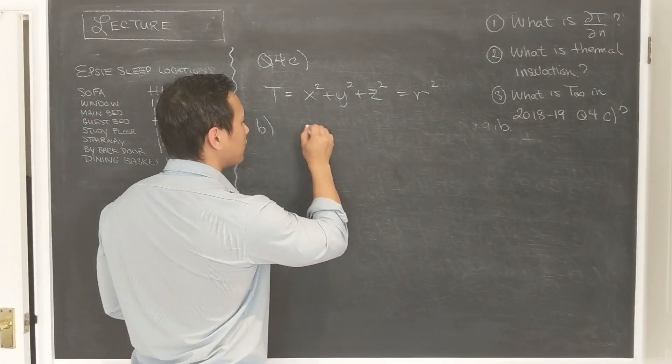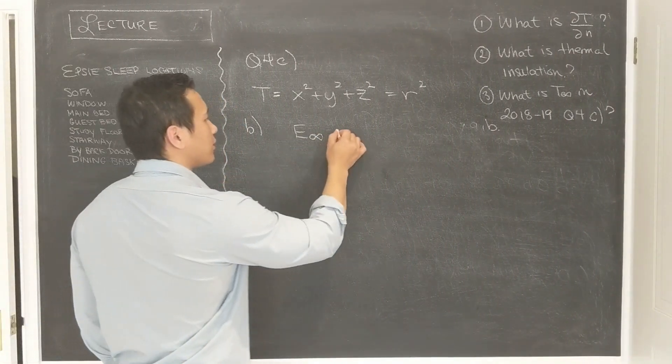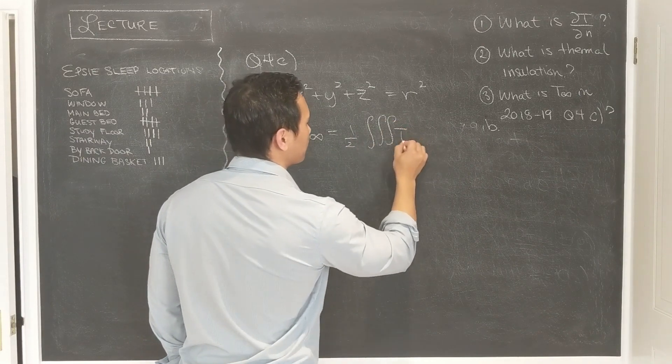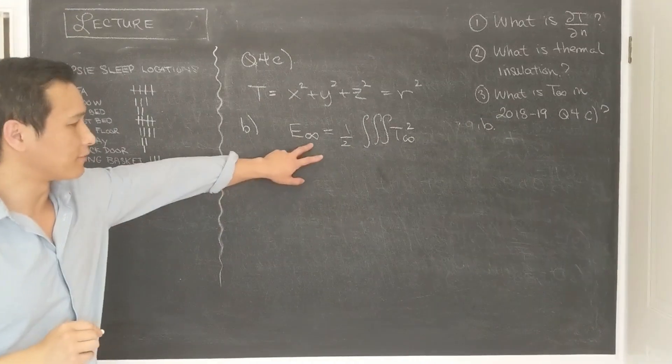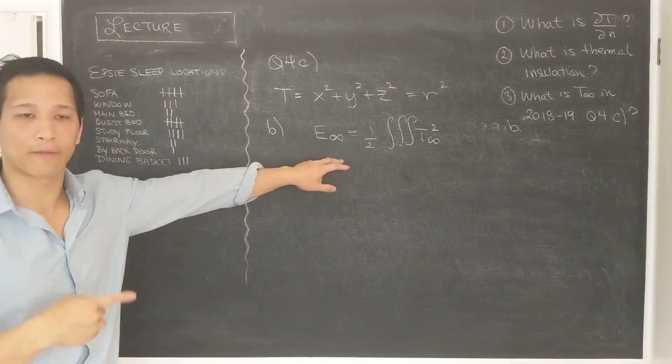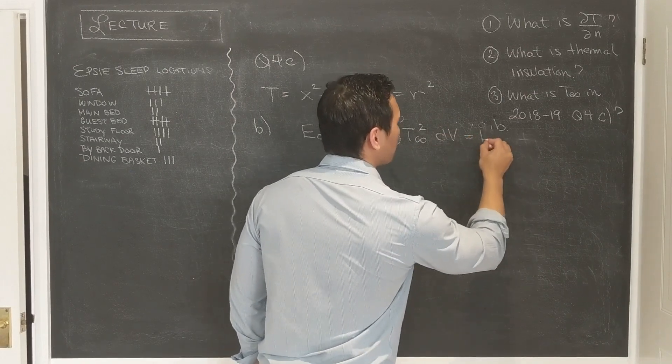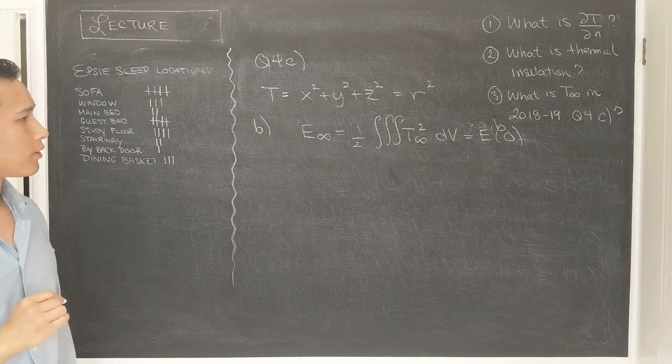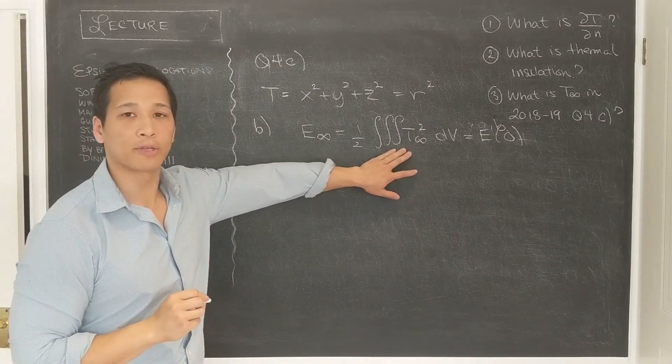So basically, E infinity, the energy at infinity, is one-half triple integral over the temperature at infinity in time. So this is infinity in time. The energy after a long time, dV. And that would have to be the same as the initial energy in the system. And then all you have to do is figure out how to compute this thing here.